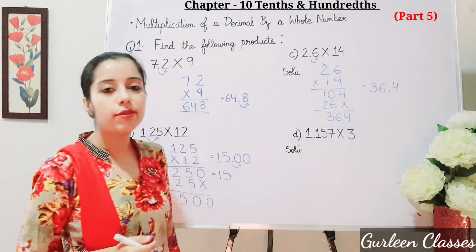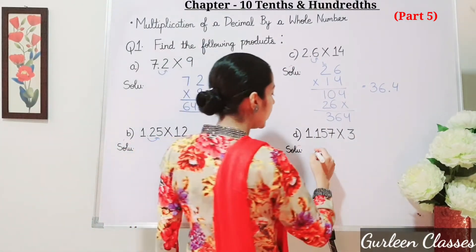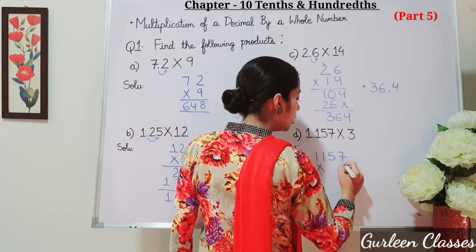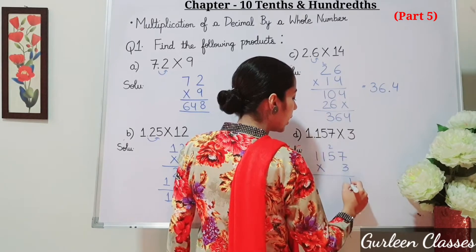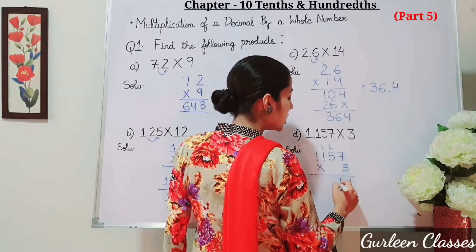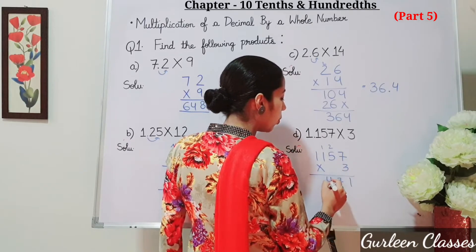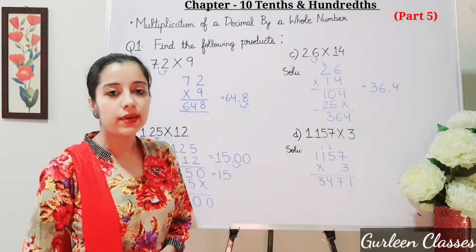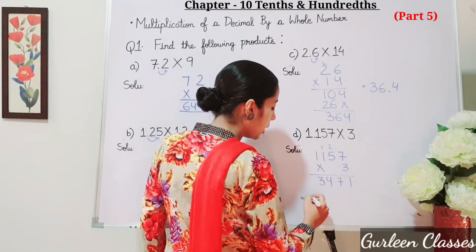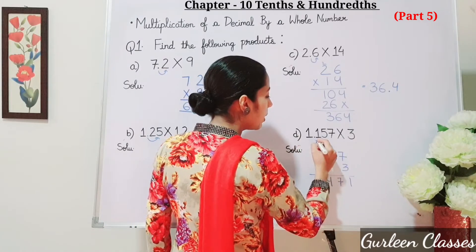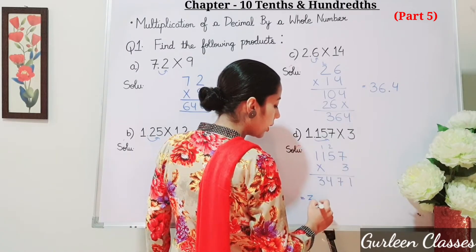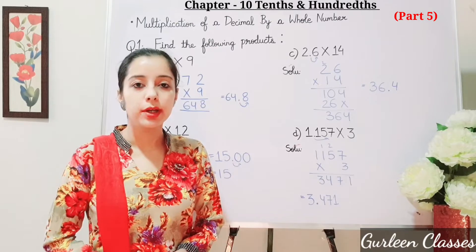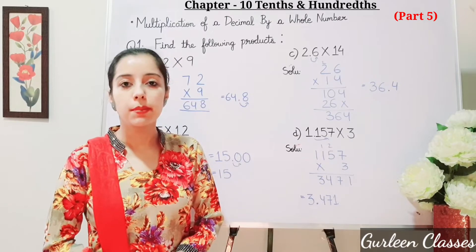Now part d: 1.157 into 3. So multiply 1157 into 3. 7 threes are 21, 5 threes are 15 plus 2 is 17, 1 threes are 3 plus 1 is 4, 1 threes are 3. So the answer is coming 3471. Now let us place the decimal point — after the decimal point there are 3 digits. So the answer is 3.471. I hope students now you are able to multiply a decimal number by a whole number.